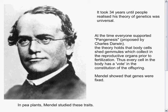It took a long time before people realized his theory of genetics was universal. At that time, everybody supported a theory of pangenesis, in which body cells shed things called gemmules which collect in the reproductive organs prior to fertilization, and so every cell in the body had a vote in the constitution of the offspring.